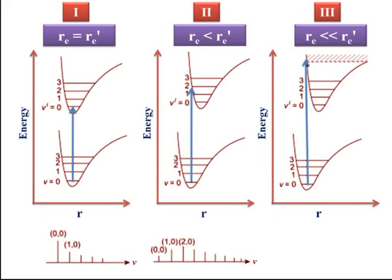In the second spectrum, the transition probability of 0→2 transition is maximum as compared to 0→1 and 0→0 transitions, because of the displacement of the excited state potential energy curve from the equilibrium position of the ground electronic state. Since the probability of 0→2 transition is maximum, the spectral line for 0→2 transition has the maximum height. In the third spectrum, since transition takes place from v = 0 to the dissociation limit, the spectral lines for higher transitions like 0→5 and 0→6 are higher compared to 0→0 and 0→1.